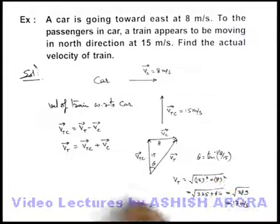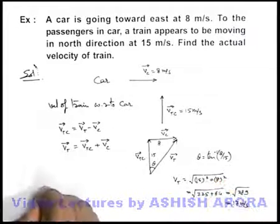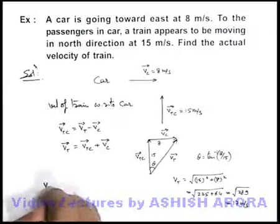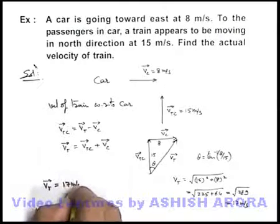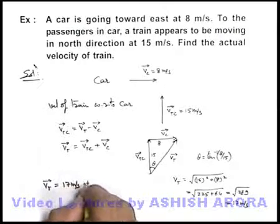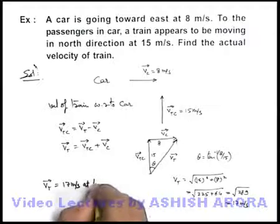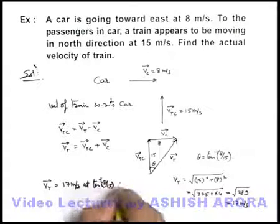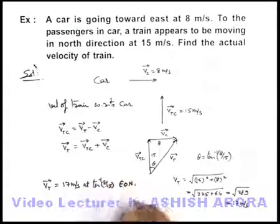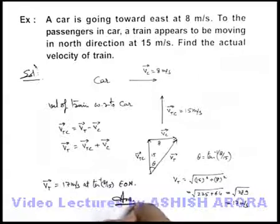The direction of the V_T vector gives the final answer: V_T equals 17 meters per second at tan inverse of 8 by 15, east of north. This is the answer to this problem.